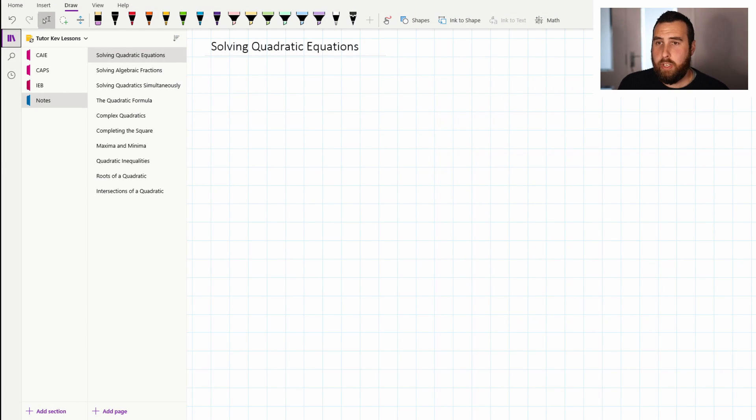When solving quadratic equations, it's like a two-step process. The first step is to get into your quadratic format, which is ax² + bx + c, and once you've got that, make sure that it is equal to zero. The second step is to factorize. Once you've got those two things, you should be able to solve your quadratic equation.